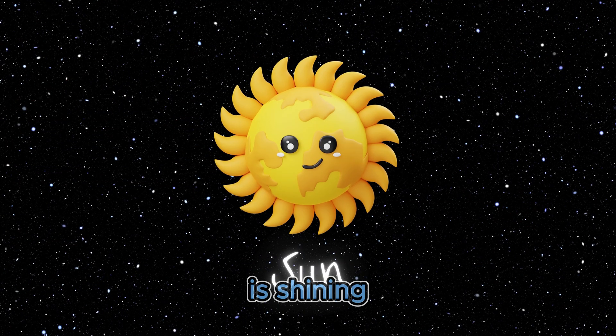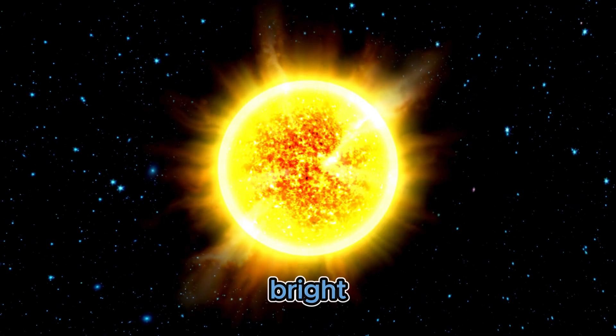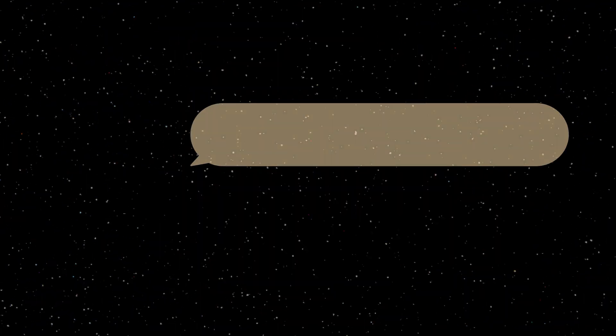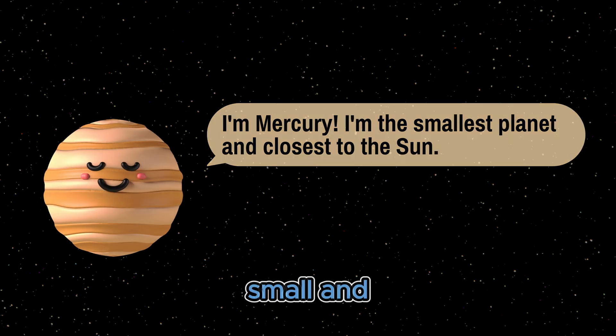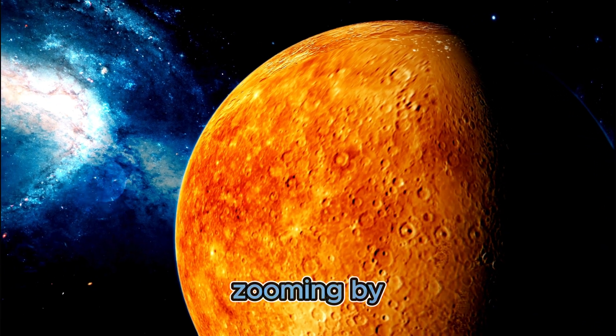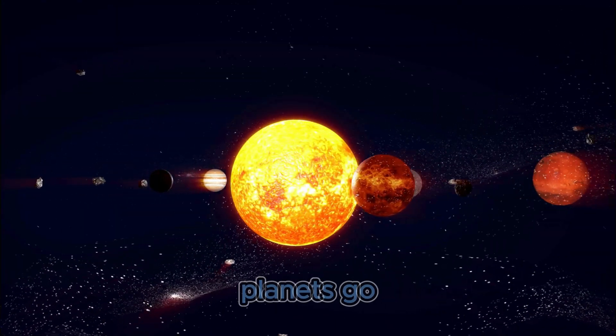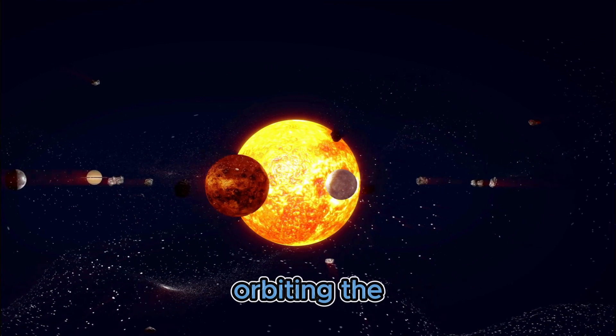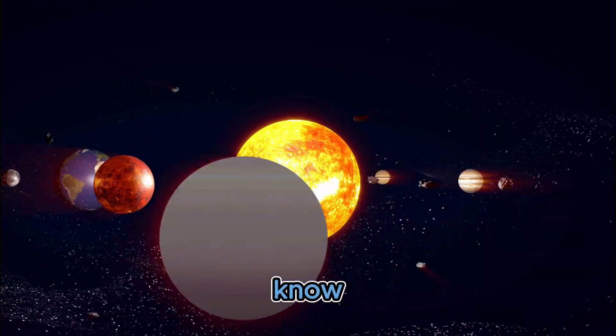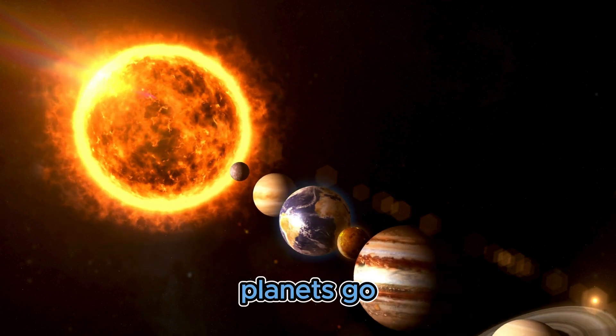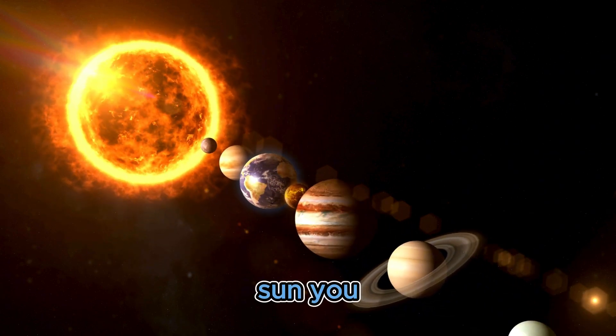The sun is shining big and bright, it keeps us warm with all its light. Mercury is small and fast, zooming by, it's never last. Round and round the planets go, orbiting the sun you know.